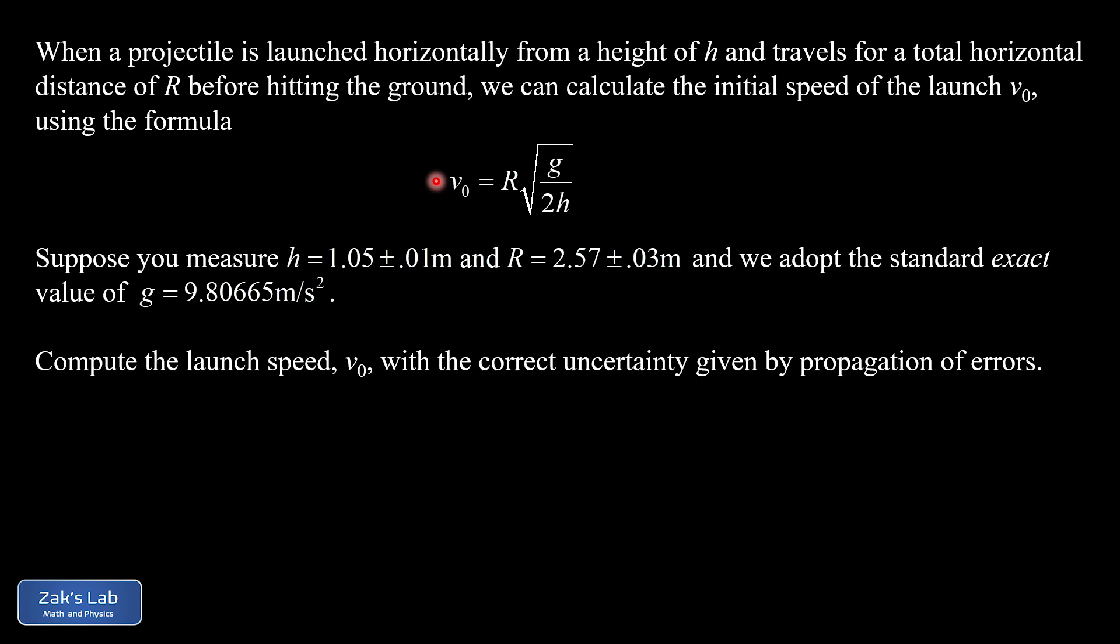And the formula we're looking at tells us how to calculate the muzzle velocity of that projectile based on how high it started and how far it went. So we get the initial speed of the projectile as R times square root g over 2h, where R is the range, h is the initial height.